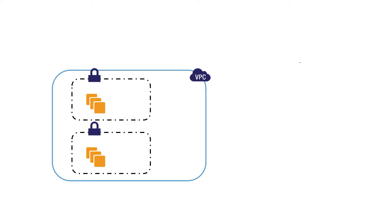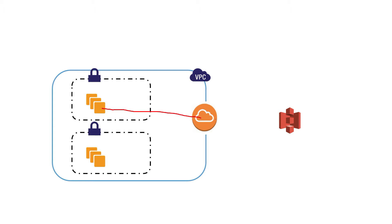Now let's assume you want to connect your EC2 instance to an S3 bucket. Generally, all the traffic from your EC2 instance will be routed to an internet gateway. There is a router, the router refers the route table, and then it connects to the internet gateway. Via this internet gateway it connects to the public internet network, and through that it talks to your S3.